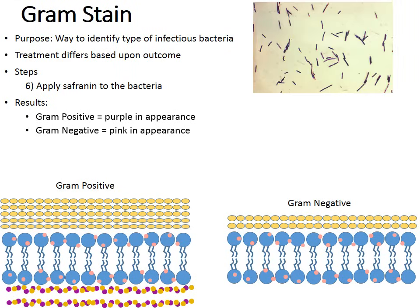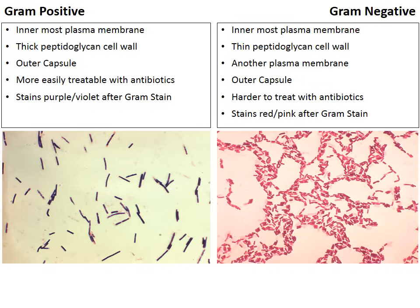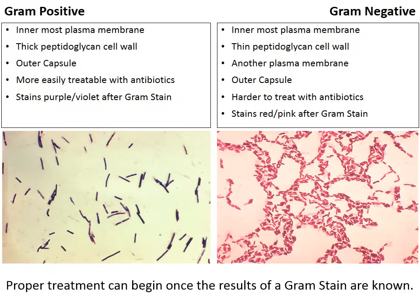Here are actual pictures: gram-positive bacteria show the dark purple color, and gram-negative bacteria show the reddish-pinkish color. Putting the two side by side one last time — knowing whether a bacteria is gram-positive or gram-negative allows us to begin proper treatment. Gram-positive are more easily treatable with antibiotics because they only have one phospholipid bilayer. Gram-negative are more difficult to treat because of their dual phospholipid bilayer.